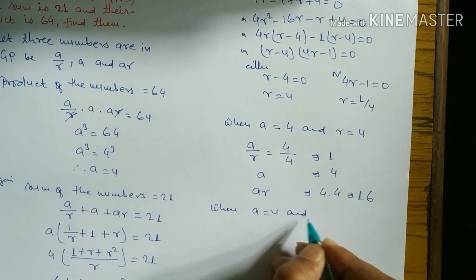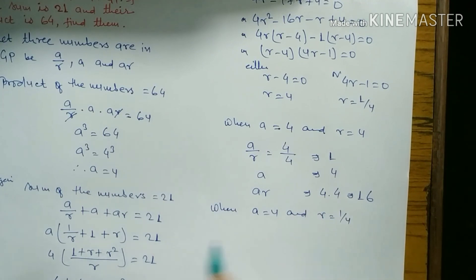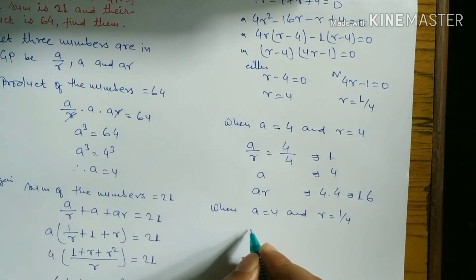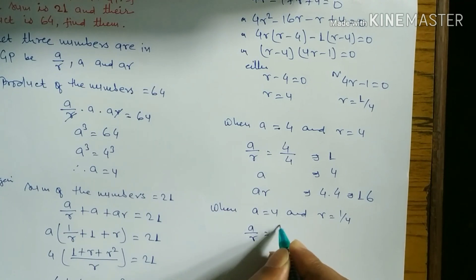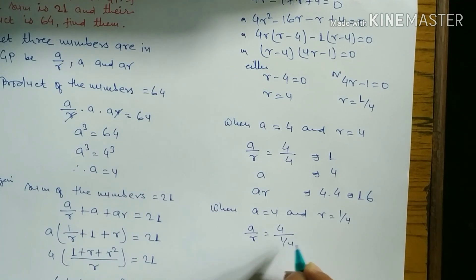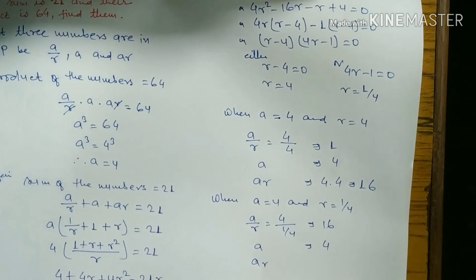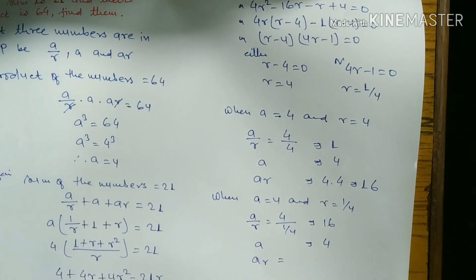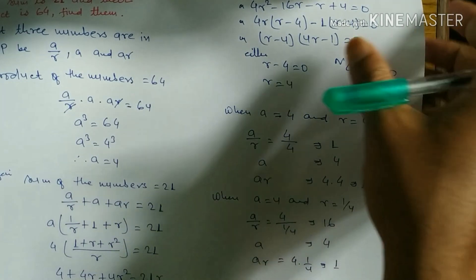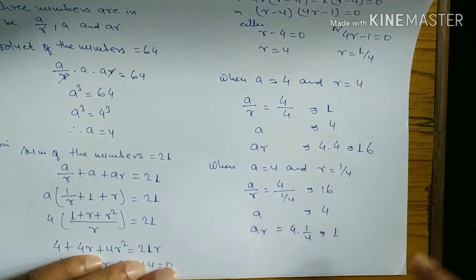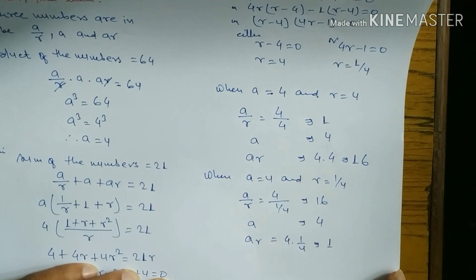Similarly when a = 4 and r = 1/4: a/r = 4 ÷ (1/4) = 16, a = 4, ar = 4 × (1/4) = 1. Hence the required numbers are 16, 4, and 1.